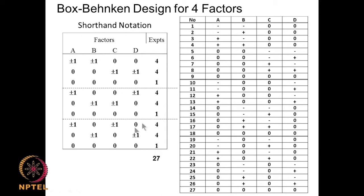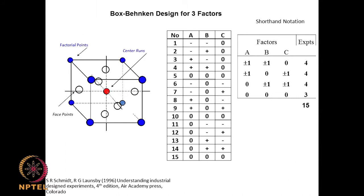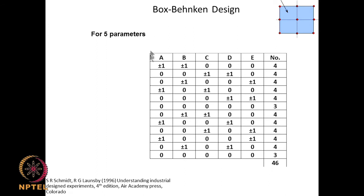This shorthand notation corresponds to the longhand notation we are used to. For a Box-Behnken design with 4 factors we need 27 experiments, and for 3 factors we need 15 experiments. For 5 factors (A, B, C, D, E) developed in the same way, you end up with 46 experiments, including 6 central point experiments.